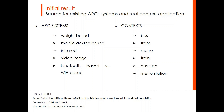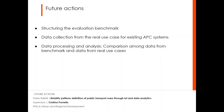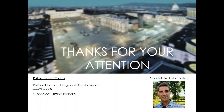The most commonly used APC systems are primarily based on stereoscopic cameras or infrared detectors. Phone-based solutions are less adopted up to now. The future action plan involves structuring the evaluation benchmark, collecting data from real use cases for existing APC systems installed on vehicles, and processing and analyzing data in terms of accuracy. Thank you for your attention, I hope you enjoyed this video.